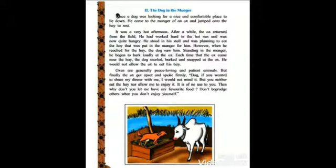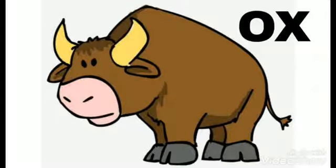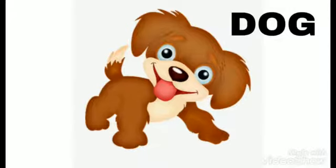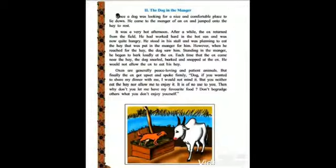So students, we have completed our story reading. This is a story of an ox and a dog. How many of you have heard this story? Those who are fond of reading storybooks, they might have come across this story. Let us begin the first paragraph. The Dog in the Manger. Once a dog was looking for a nice and comfortable place to lie down. He came to the manger of an ox and jumped onto the hay to rest.